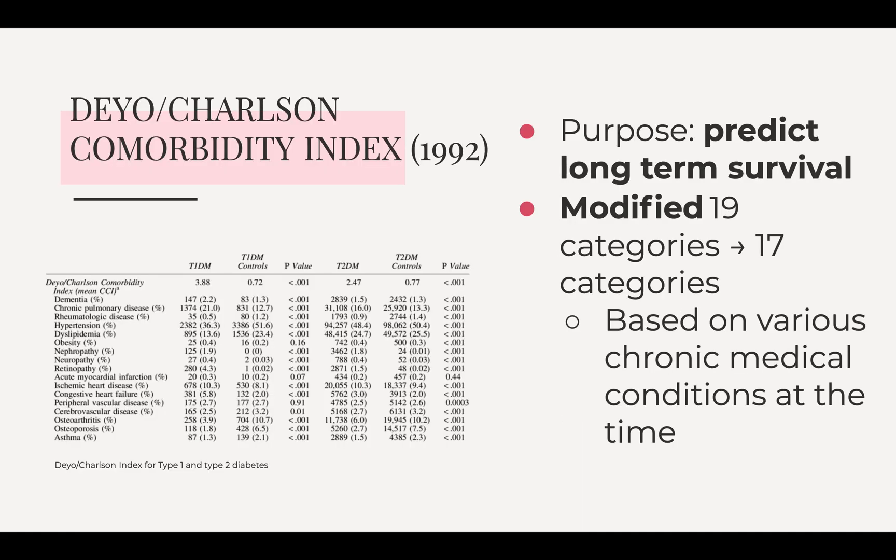Later on in 1992, Deyo created a newer version of the comorbidity index, which basically predicts long-term survival instead of mortality. So instead of having 19 different categories, it was switched to 17 different categories based on various chronic medical conditions at the time. With more medical discoveries over time, some categories became less significant and didn't have a really high mortality rate, so they were removed, leaving 17 categories.